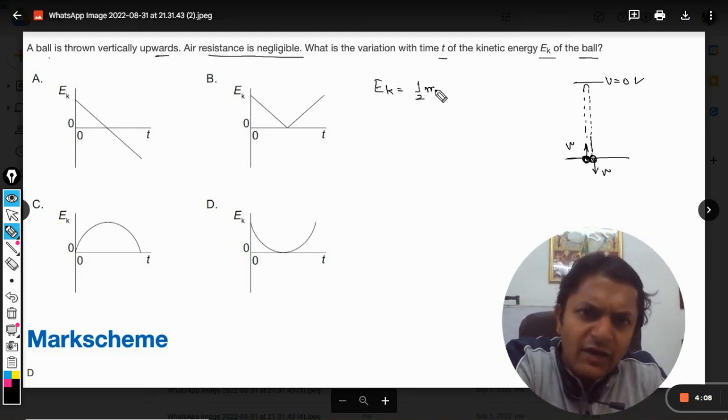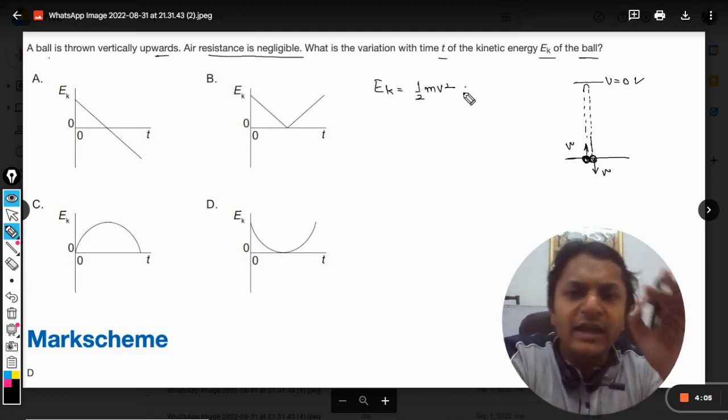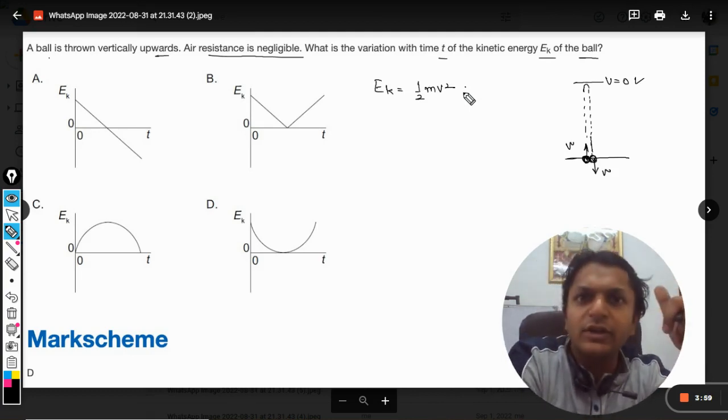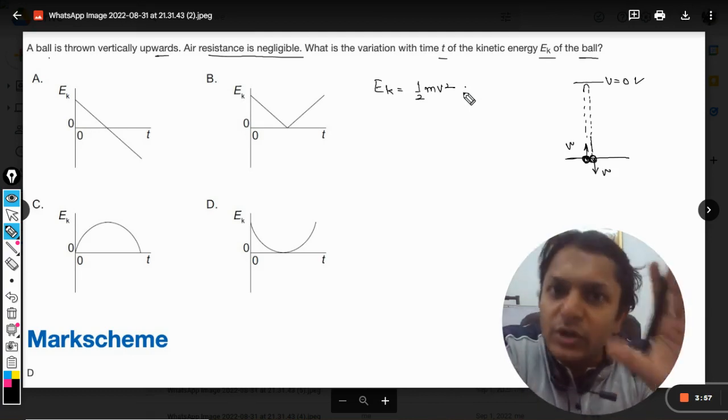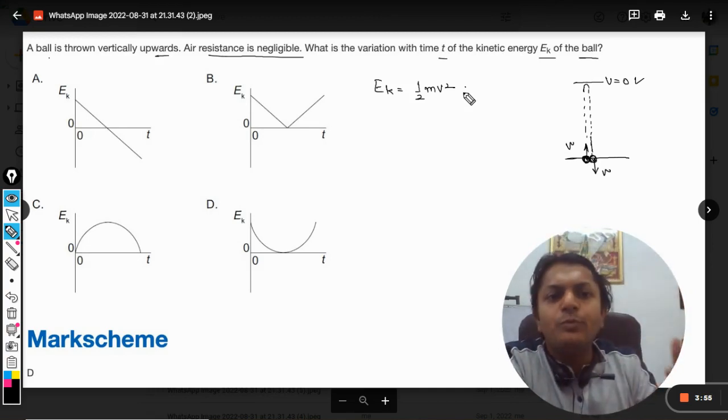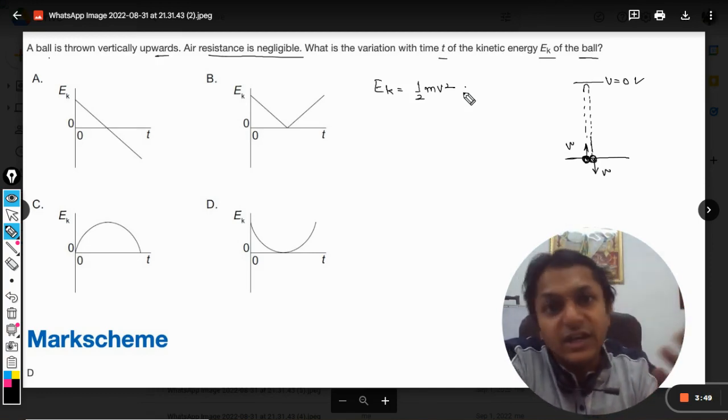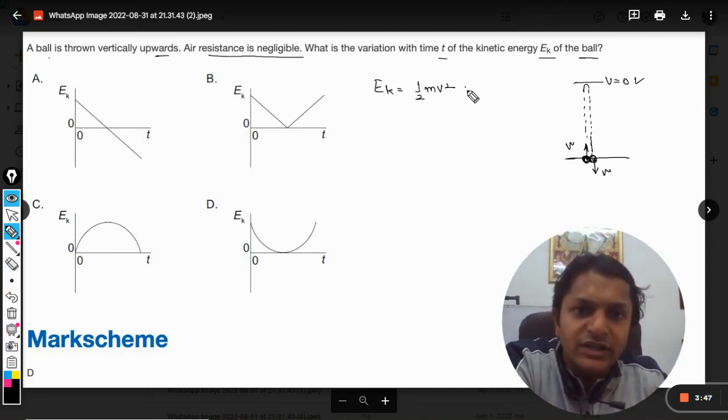So we can see what will be the kinetic energy. Now Ek initially will be given by half m v squared. Because kinetic energy is a scalar quantity, it doesn't matter whether the body is moving upward or going downward, it is going to be positive every time. There is no point of sign convention here because Ek, the kinetic energy, is a scalar quantity.